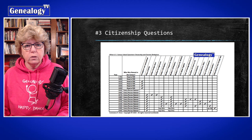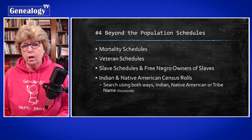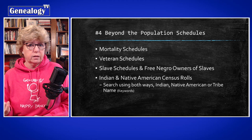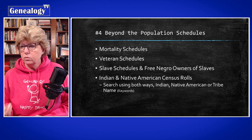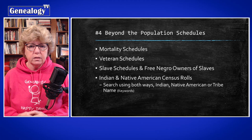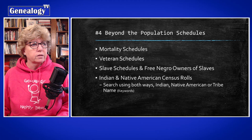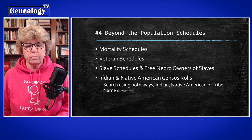Tip number four is 'beyond the population schedule.' I'm suggesting that if it fits your ancestor, look at other schedules — there are mortality schedules, veteran schedules, slave schedules, and Indian and Native American census rolls. There's quite a bit of other information available. Make sure you're mindful of that when doing your research. Don't stop at just the population schedule; if it fits, do a little deeper digging.